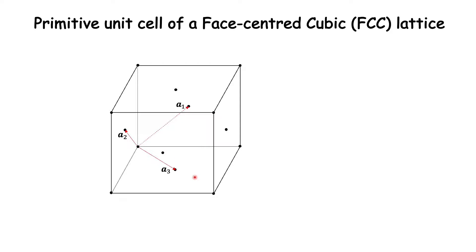If we add A1 and A2, we arrive at the top face center. Similarly, if we add A2 and A3, we arrive at the front face center. And if we add A1 and A3, we arrive at the right face center. We now have seven corners of the primitive unit cell: the original corner of the cube and six face centers. However, a parallelepiped unit cell requires eight corners. The eighth corner in this case is the diametrically opposite corner from the initial origin. Thus we have a primitive unit cell, as it has lattice points only at its corners.